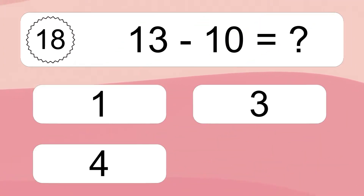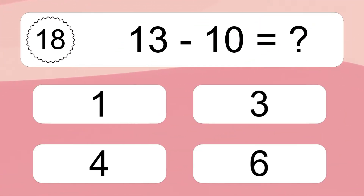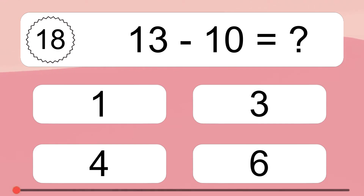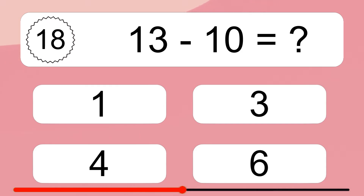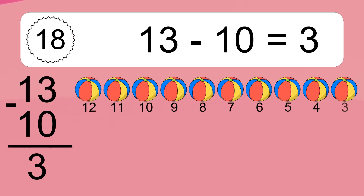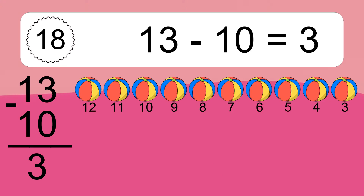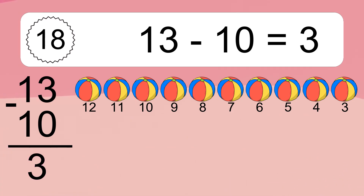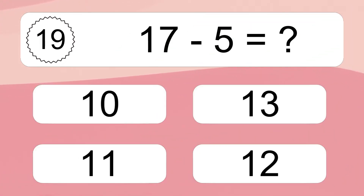12 minus 10 equals what? 13 minus 10 equals 3. Let's count it: 12, 11, 10, 9, 8, 7, 6, 5, 4, 3.